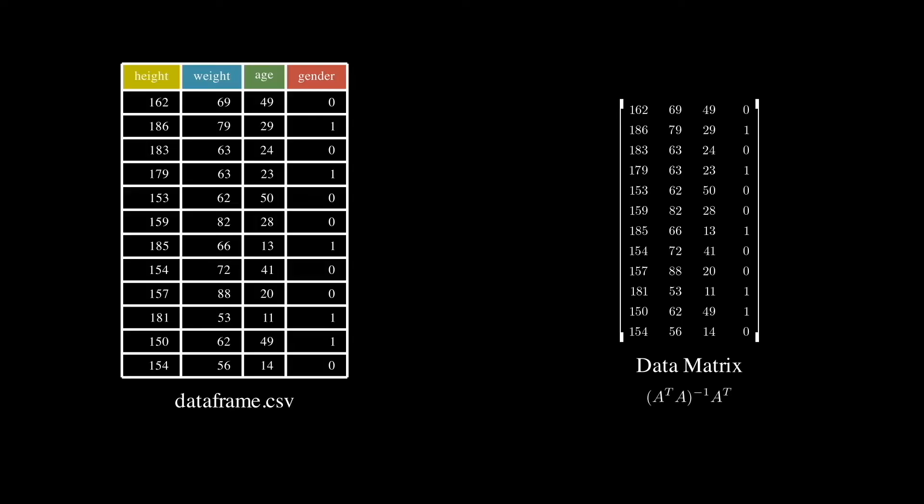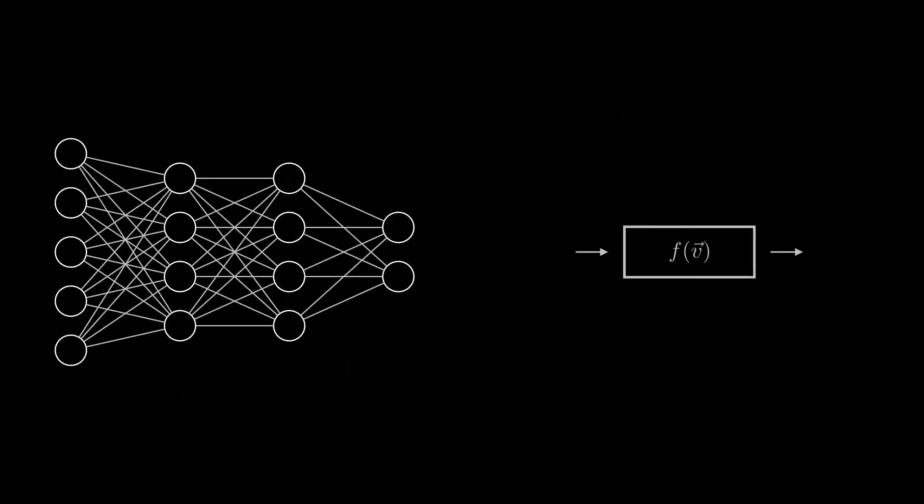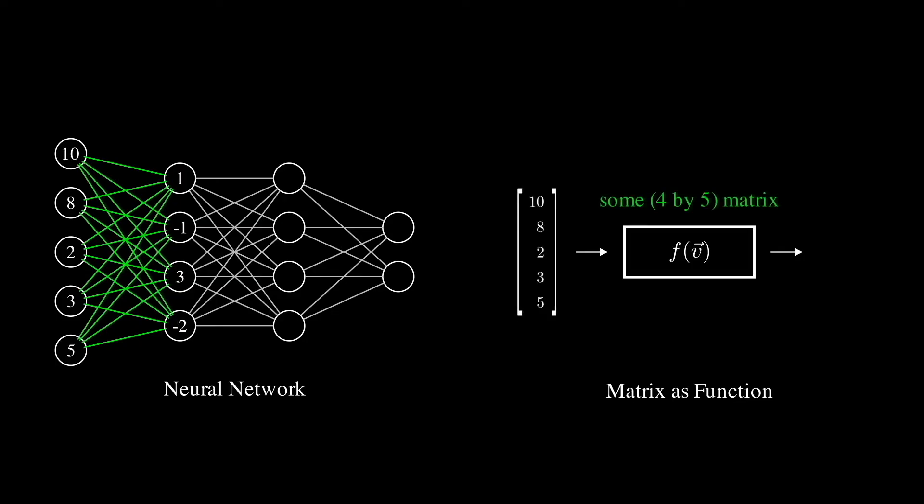For data scientists, a matrix is just a manifestation of a table, which facilitates data analysis. And for the deep learning folks, matrix is just another Python function, which takes a vector as input and returns a vector as output. And this list really goes on.